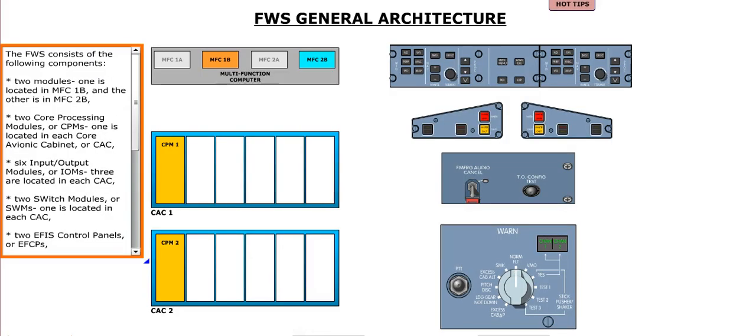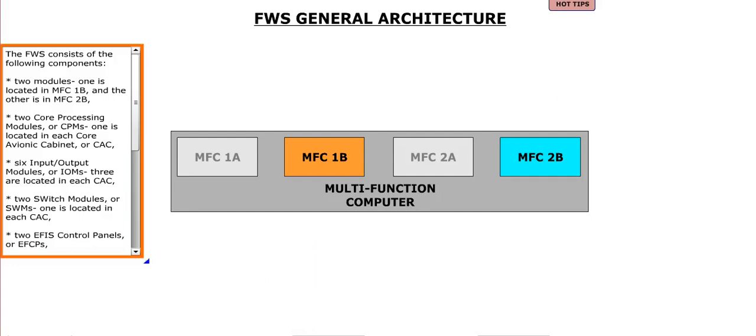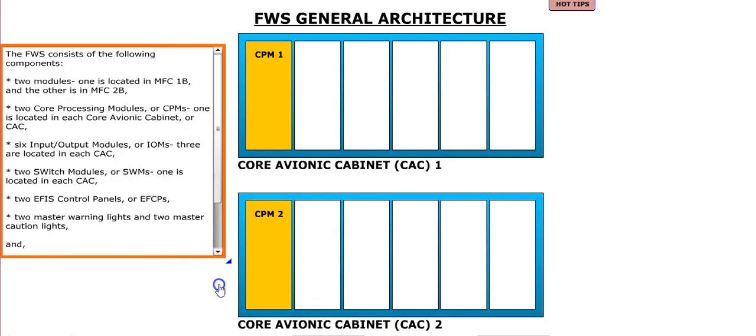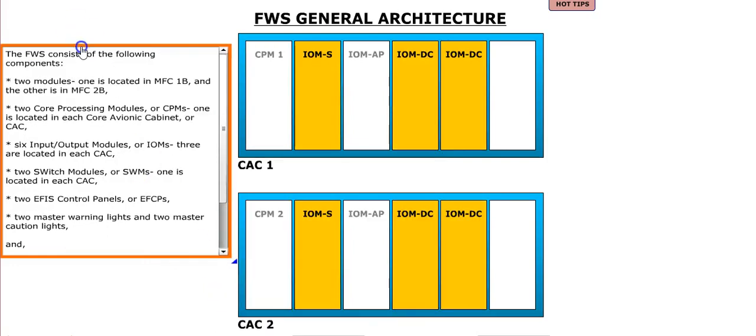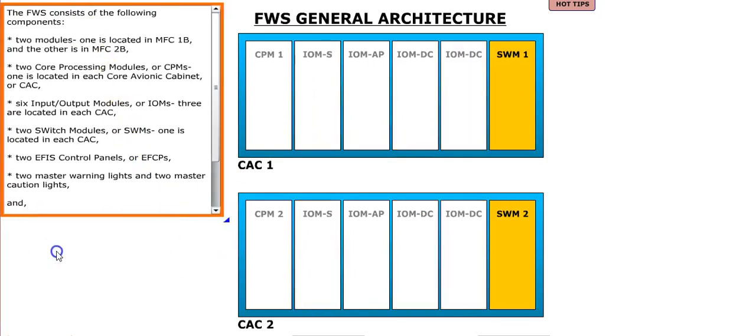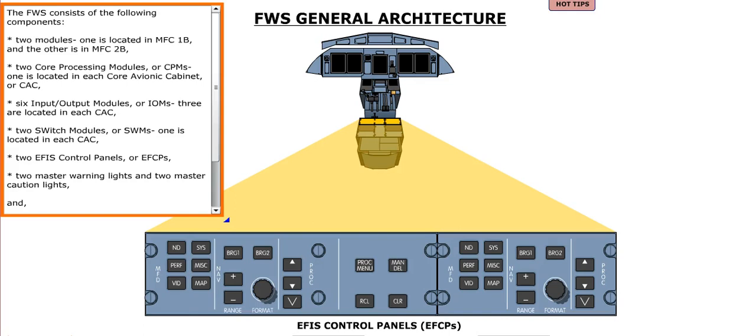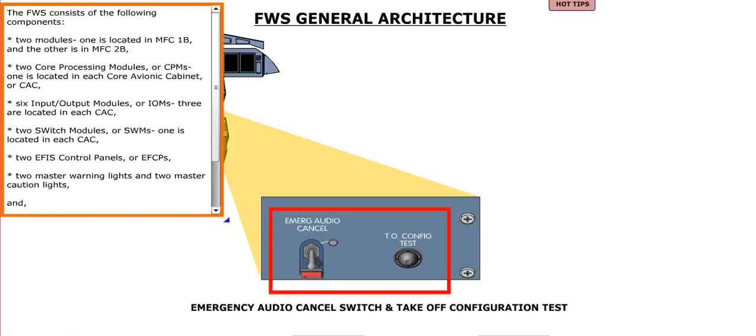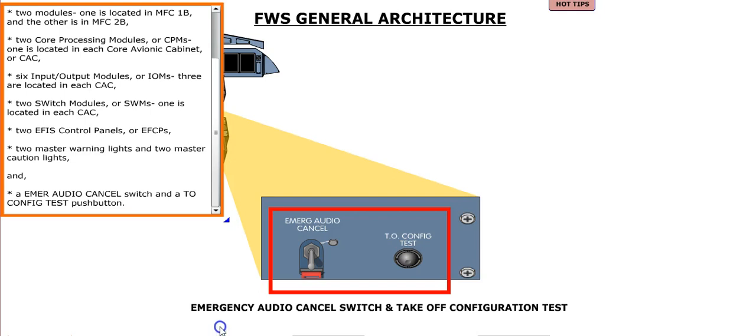The FWS consists of the following components: two modules, one is located in MFC-1B and the other is in MFC-2B. Two core processing modules, or CPMs, one is located in each core avionic cabinet, or CAC. Six input-output modules, or IOMs, three are located in each CAC. Two EFIS control panels, or EFCPs, two master warning lights and two master caution lights, and an emergency audio cancel switch and a take-off configuration test push-button.